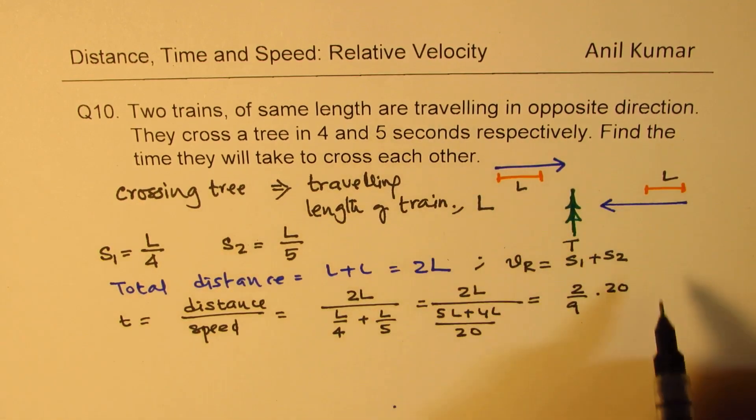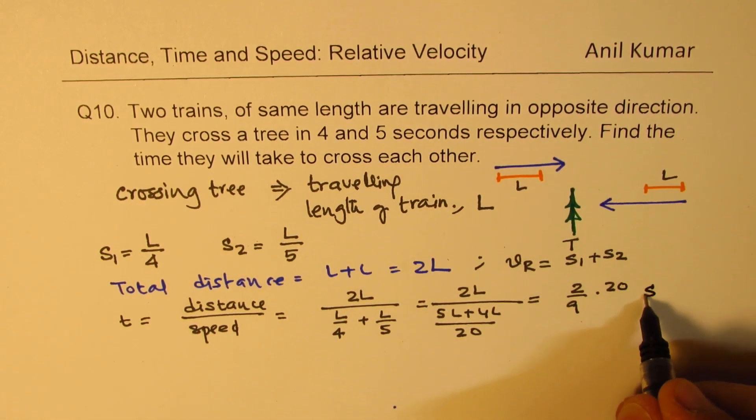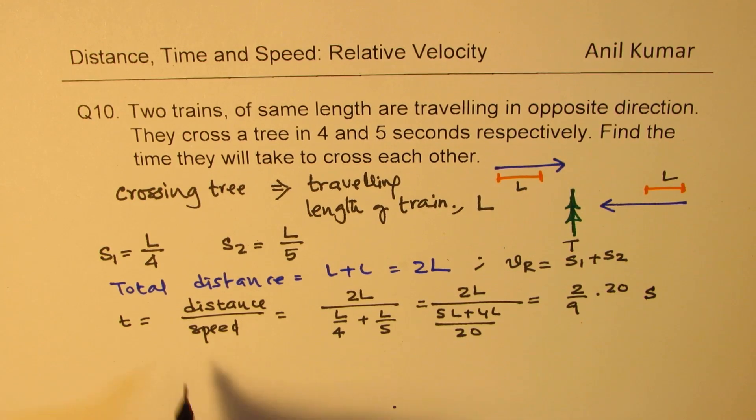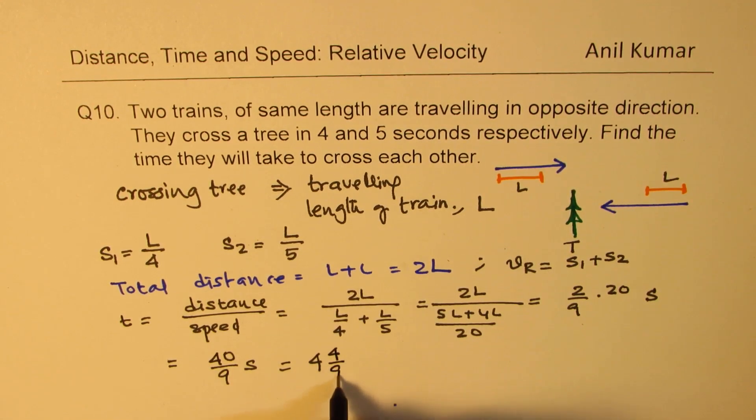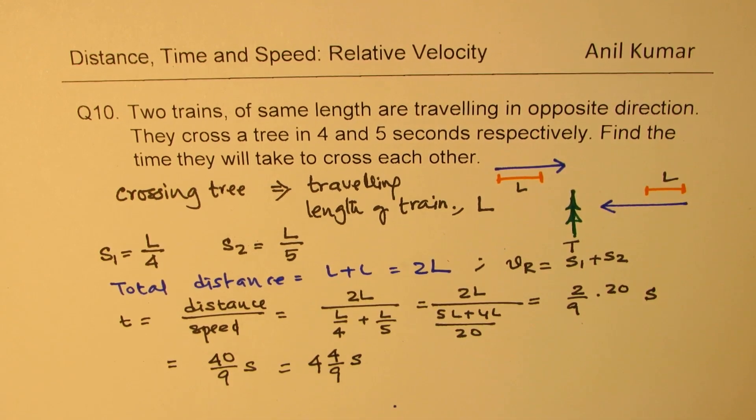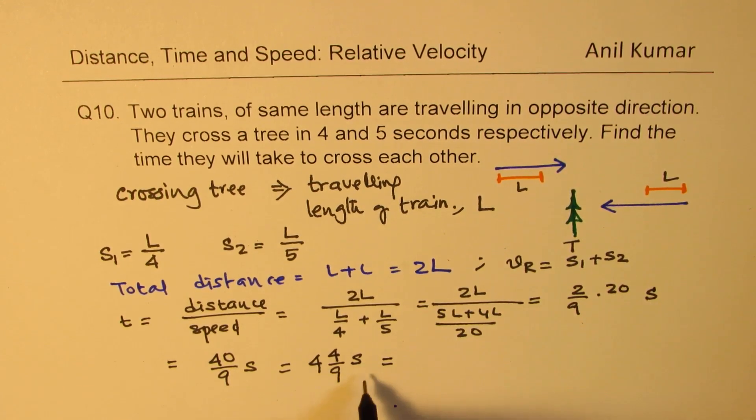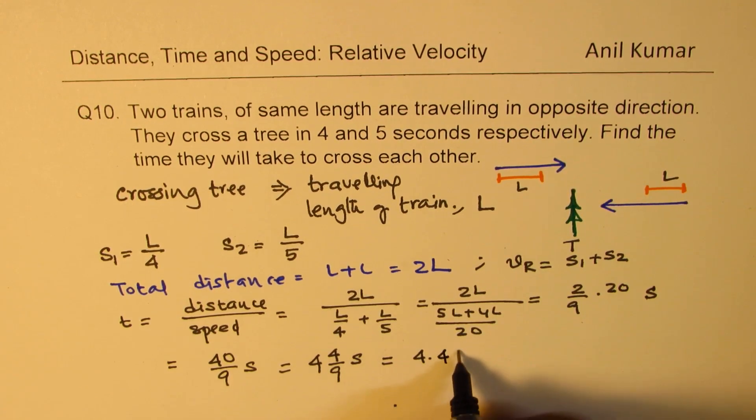And this time is in seconds. So we get 40 over 9 seconds. 9 times 4 is 36, 4 and 4 over 9 seconds. That is what it is. You can approximate this to, let's say, 4.44 seconds. You can write like this also.